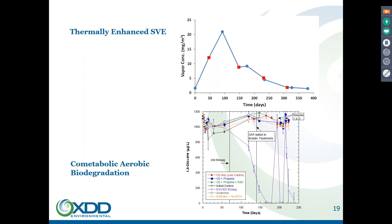The reactor was spiked again with 1,4-Dioxane and concentration dropped like a stone again, and a third time as well — a very effective process and more robust than the direct use of 1,4-Dioxane by bacteria.